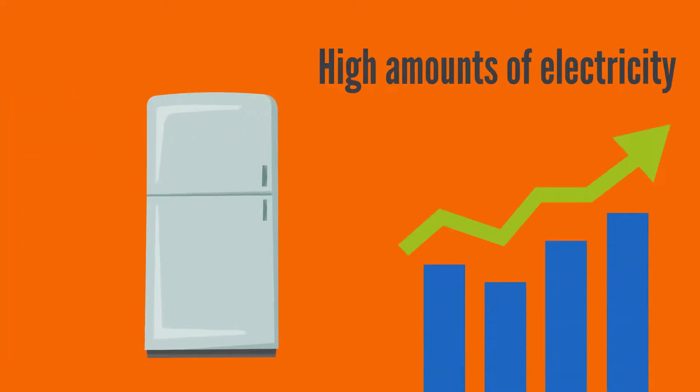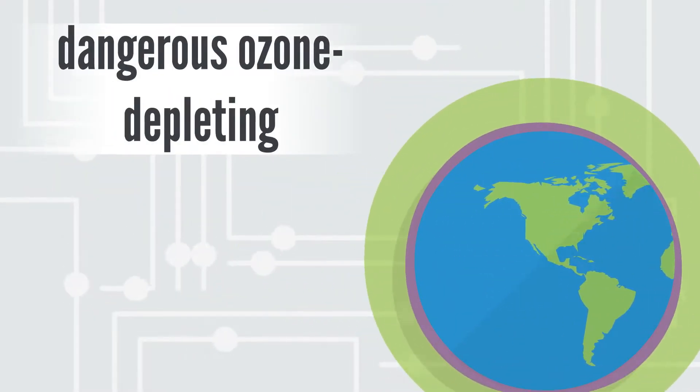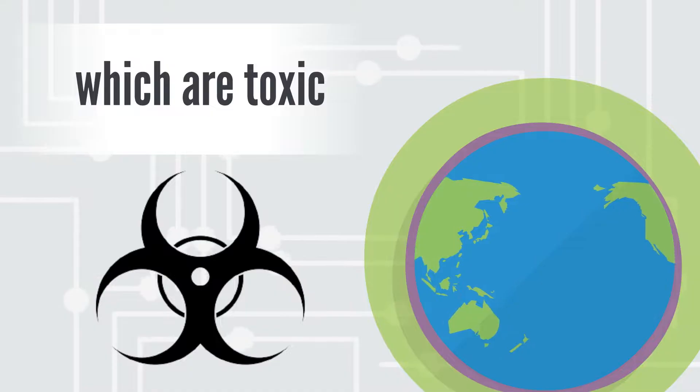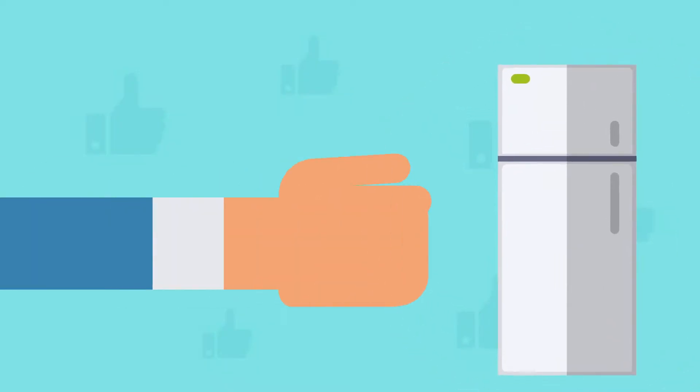Conventional refrigerators use high amounts of electricity and dangerous ozone-depleting refrigerants, which are toxic. Our magnetized fridges use considerably less electricity, using solid magnets and water-based cooling liquids. This means our fridges work just as well on lower electricity levels without harming our environment.